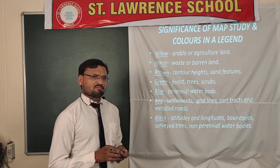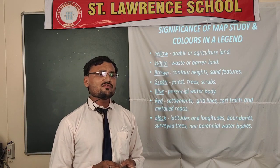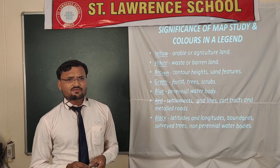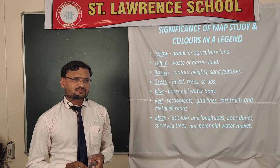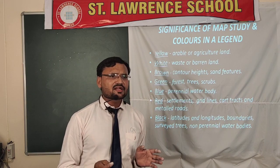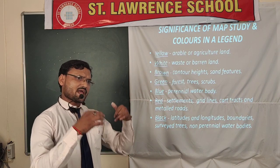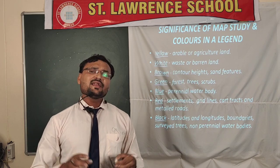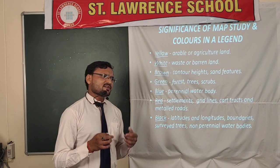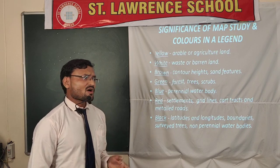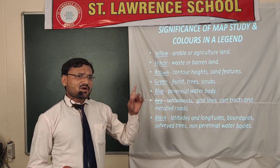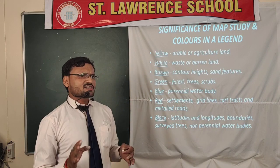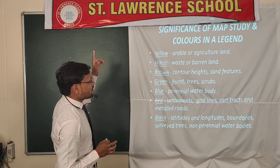Next is the significance of map study and the use of colors. Yellow color is used for agricultural land — regions rich in agriculture are represented with yellow. White color is used for barren and uncultivated regions, and also for mountain peaks covered with snow where no vegetation is found. Brown color is used for contour heights and sand features such as desert regions.